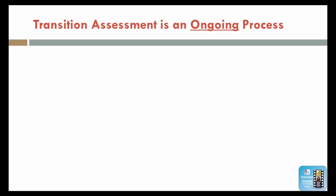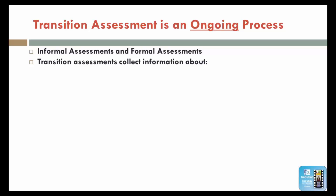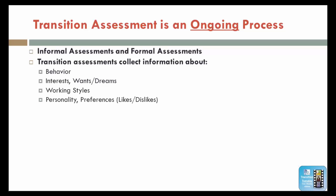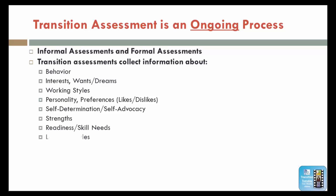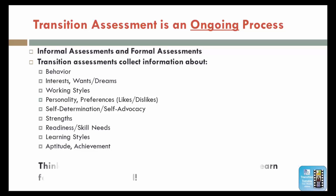Let's look at transition assessment as an ongoing process, and not just right before the student's IEP meeting. There are informal assessments and formal assessments. Transition assessments collect information about behavior, interests, wants and dreams, working styles, personality preferences, likes and dislikes, self-determination, self-advocacy, the student's strengths, readiness and skill needs, learning styles, aptitude and achievement. These assessments can be done in a variety of ways — online, paper-pencil, and through conversations. The important thing is to think about what the student needs to explore and then learn for life after high school.